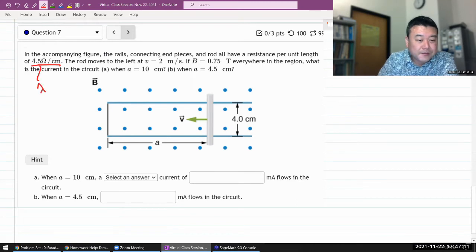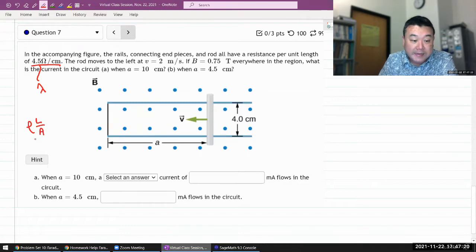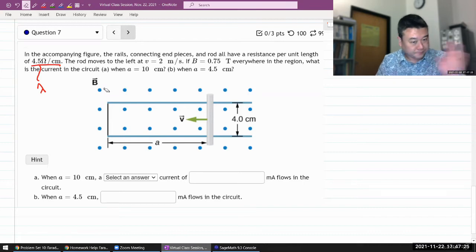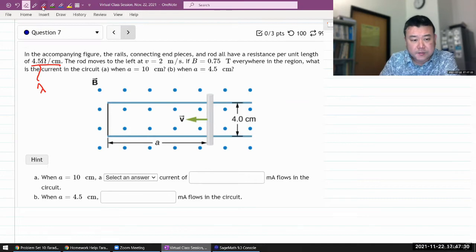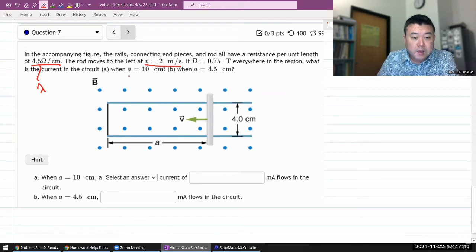I know it's not a standard symbol, but I don't have anything better. Because the resistivity rule is one where you multiply it by L and divide by A, then you get resistance. So it doesn't quite fit. Anyways, the rod moves to the left at some speed. If a magnetic field is uniform everywhere in the region, what is the current in the circuit? When A is equal to 10 centimeter, and when A is equal to 4.5 centimeter.